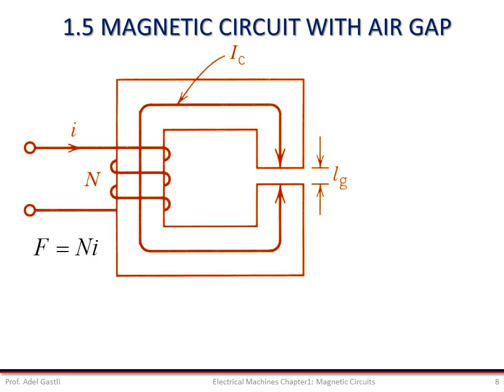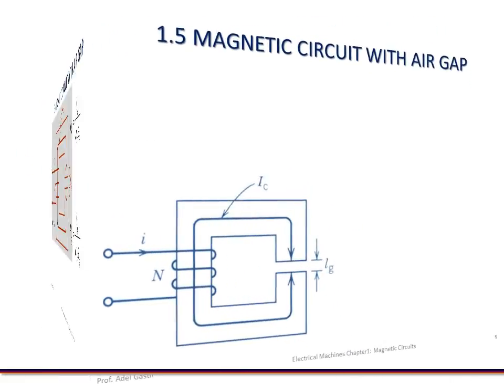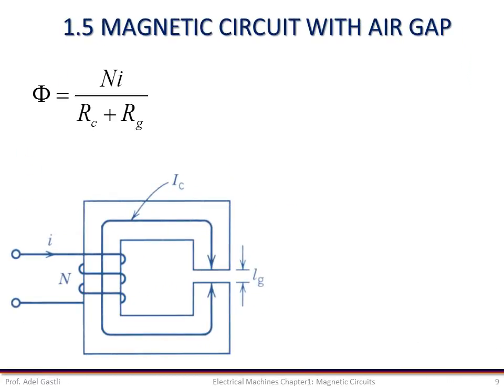The driving force in this magnetic circuit is the MMF F, which is equal to NI. And the core medium and the air gap medium can be represented by their corresponding reluctances, RC and RG respectively. Since the same flux flows in the core and the air gap, the two reluctances can be considered connected in series. Therefore, the magnetic flux is determined as the ratio of the MMF over the sum of reluctances, which are considered in series. Remember that the flux is the same in both the magnetic core and the air gap.